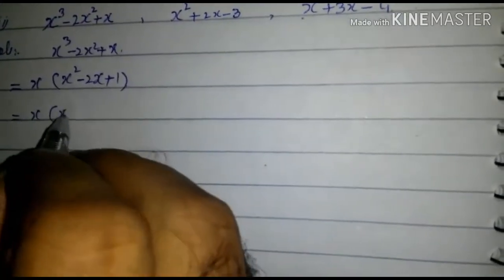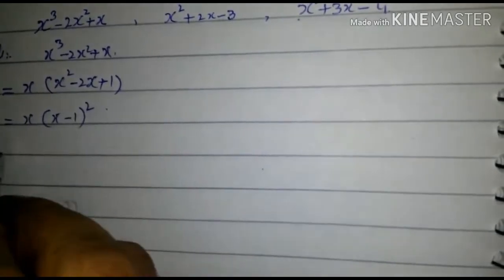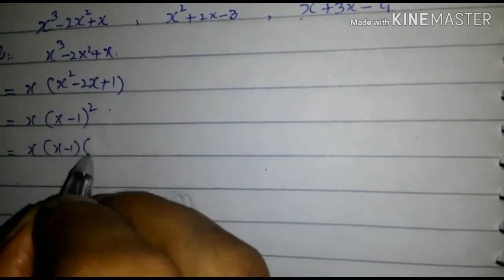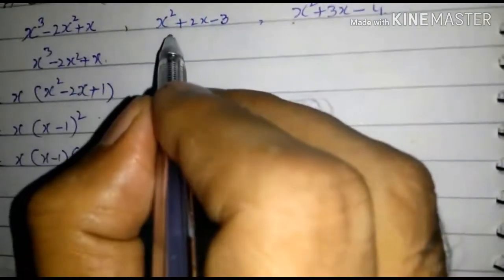x times (x - 1)², so we can write it as x(x - 1)(x - 1). Now consider the second expression.